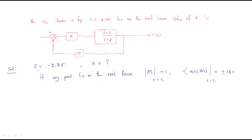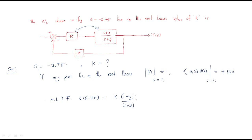First we should take the open loop transfer function. The open loop transfer function is represented as G(s) times H(s). This is a combination of two blocks: G(s) and H(s) equals 10, so we can write: K times (s plus 3) divided by (s times (s plus 2)), multiplied by H(s) which is 10.